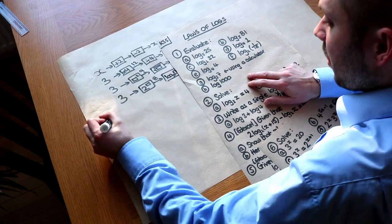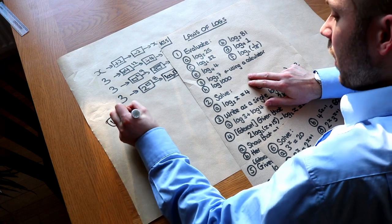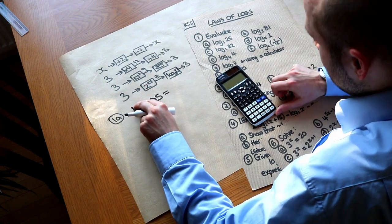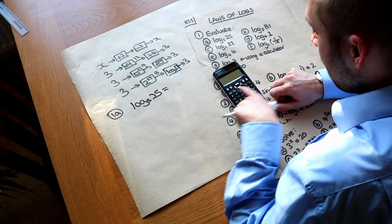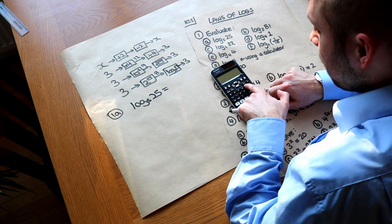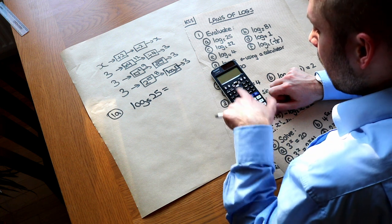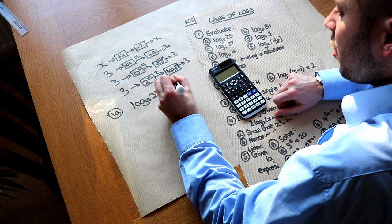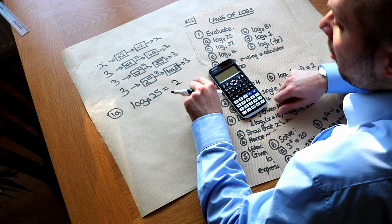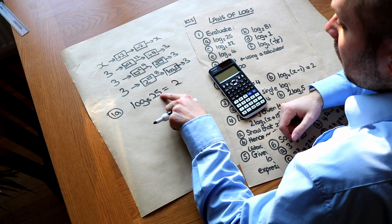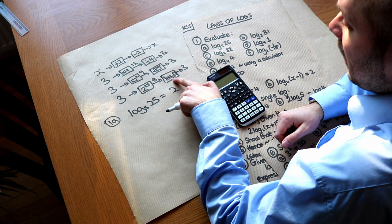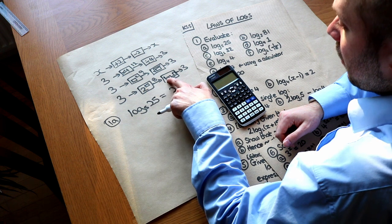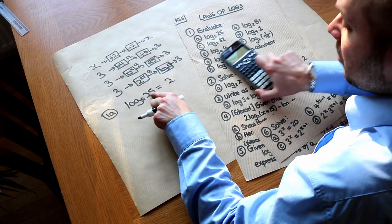Now let's use that principle to solve these initial questions. We want to evaluate log base 5 of 25. I'll firstly show you how to do it on a calculator — you'll see a log button with two little squares. We put a 5 in the small box and 25 in the big box and it gives us 2. The reason it gives 2 is because it's asking: 5 to the power of what gives you 25? So 5 to the power of 2 gives you 25.